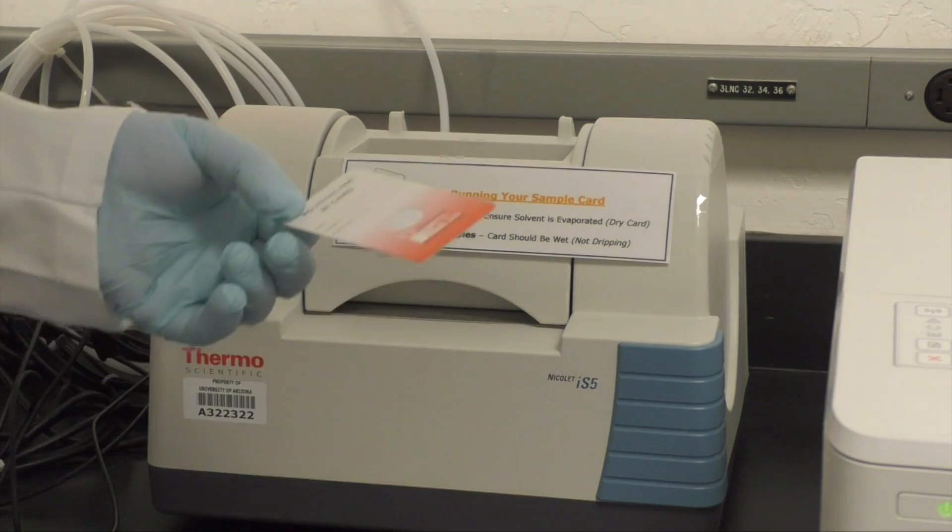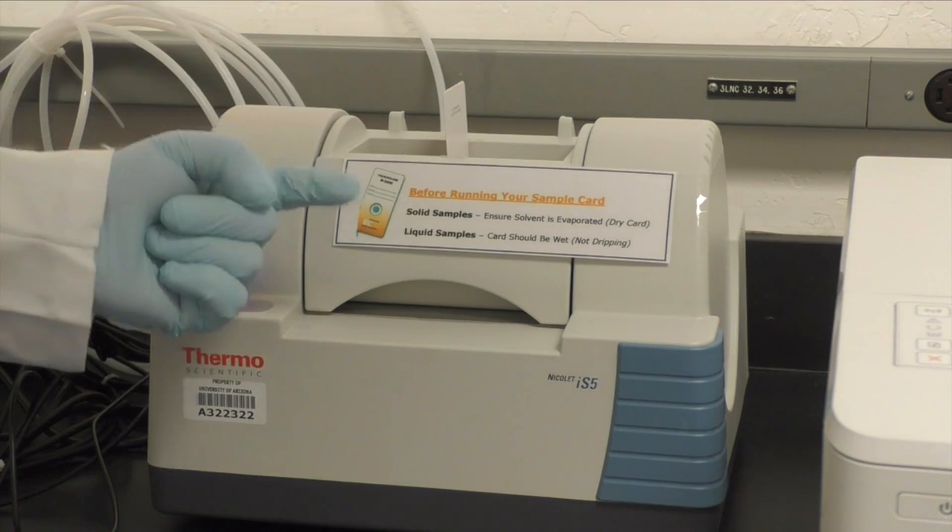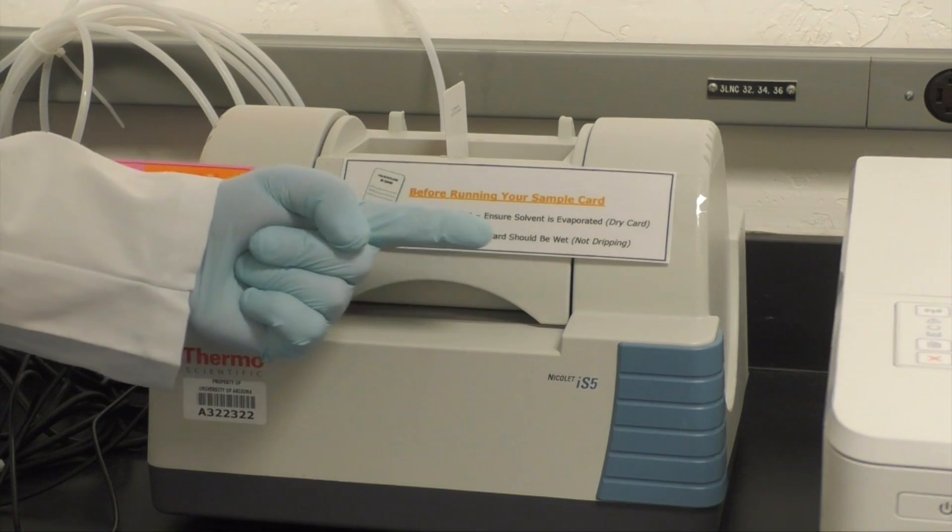Card orientation is important as the spectrometer works by passing an infrared laser beam through the PE window. The beam runs parallel to the instrument.